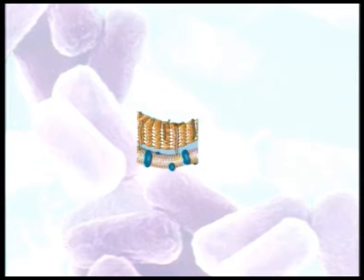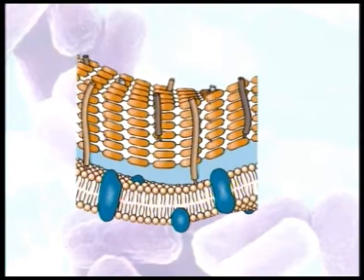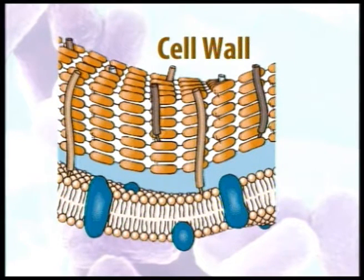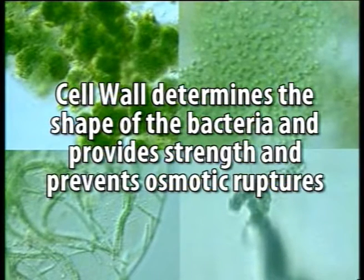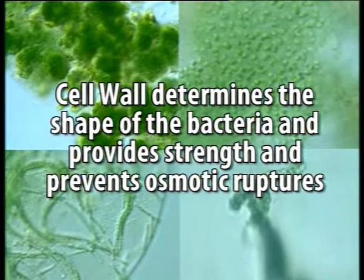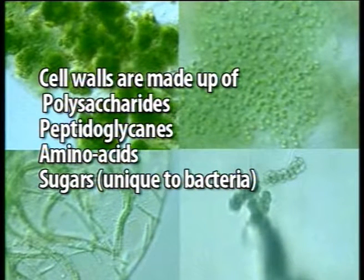The cell wall is a very important component of the bacterial cell, present in all bacteria except mycoplasmas, which are also called wall-less bacteria. Its two principal functions are: first, it determines the shape of the bacteria due to its rigidity; and second, it provides strength and prevents osmotic rupture. Cell walls are generally made up of a typical polysaccharide called peptidoglycan, which is a complex of amino acids and sugars.